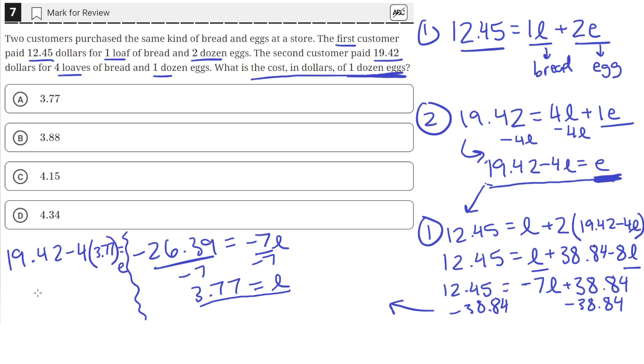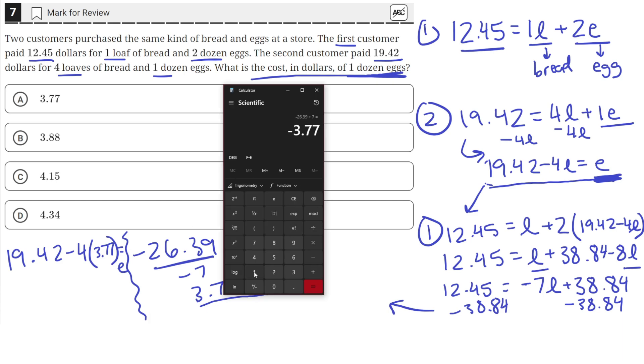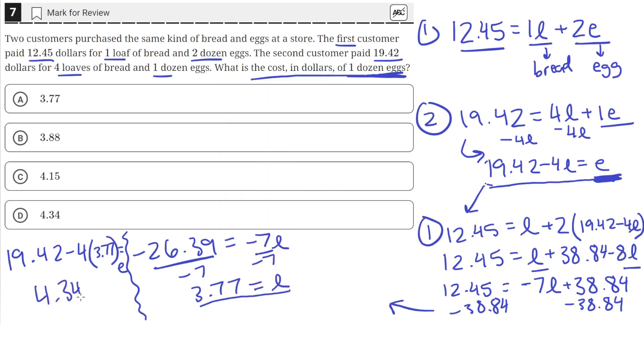This is just equal to 19.42 minus 4 times 3.77, which is just equal to 4.34. So, the price of a dozen eggs is 4.34, which is answer choice D.